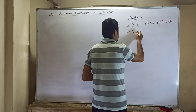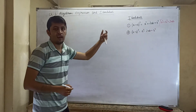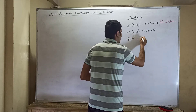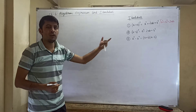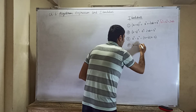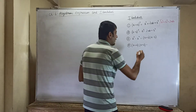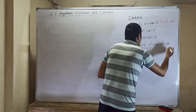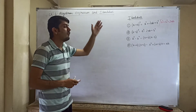The second identity is (a − b) whole squared equals a squared minus 2ab plus b squared. The third identity: a squared minus b squared equals (a + b)(a − b). The fourth and last identity: (x + a)(x + b) equals x squared plus (a + b)x plus ab. These are your four identities, and I will be teaching you how to use them in solving problems.